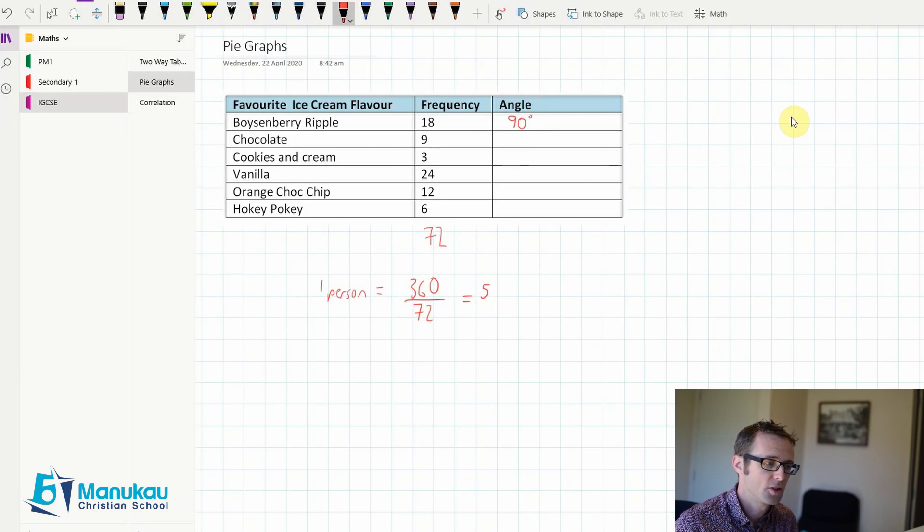5 nines, this is 45 degrees. And that does make sense, doesn't it? Given that 9 is half of 18, and 45 is half of 90. 15 degrees for the next one, for cookies and cream. This one is going to be 120 degrees for vanilla, which is a third.